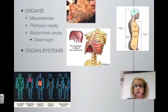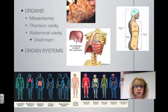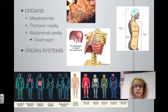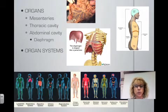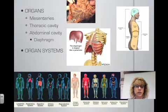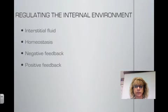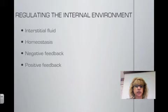There are several different organ systems, and in most textbooks it will tell you that the human body has 12 different organ systems. Each organ system combines a bunch of different organs to work together to perform a specific function, such as digestion, circulation, breathing, or reproduction.